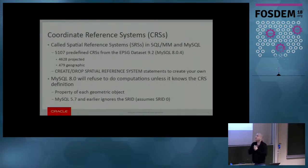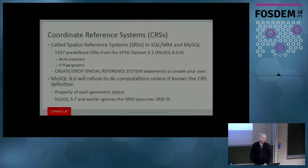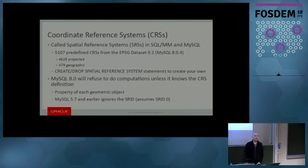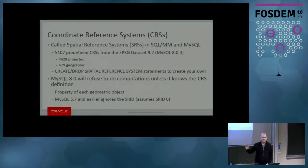We have 5,108 reference systems — 5,107 of them are from the EPSG dataset, the latest version. The final one is the abstract Cartesian coordinate system with no units on either axis, SRD 0, which we have supported for multiple versions. That was the only thing MySQL 5.7 understood, and it is the root of almost all upgrade issues, because MySQL 5.7 just ignored the SRD instead of saying this is bad — only use 0. So if you used anything other than 0 in MySQL 5.7, you're in for some tricky upgrades.